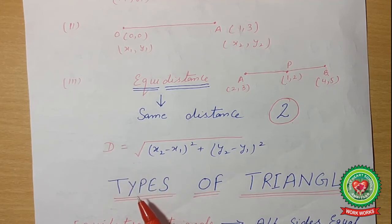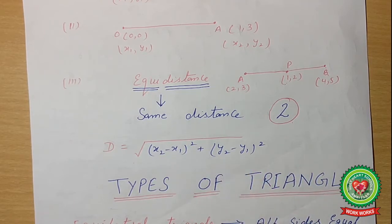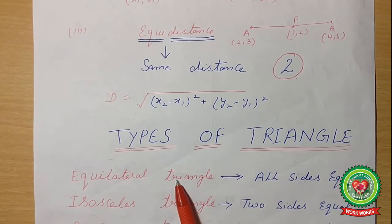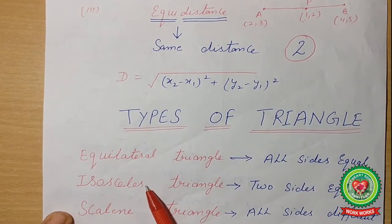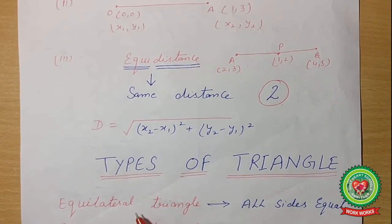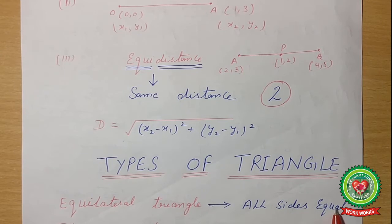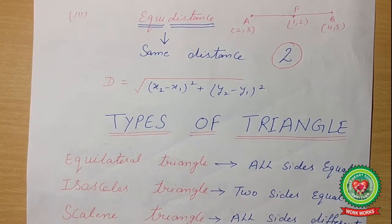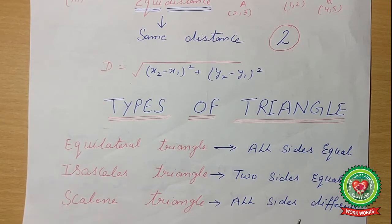Our next topic is the types of triangles related to this formula. How many types of triangles are there according to sides? Types of triangle according to sides are: equilateral triangle, isosceles triangle, and scalene triangle. An equilateral triangle has all sides equal. An isosceles triangle has two sides equal. When all sides are different, it is called a scalene triangle.